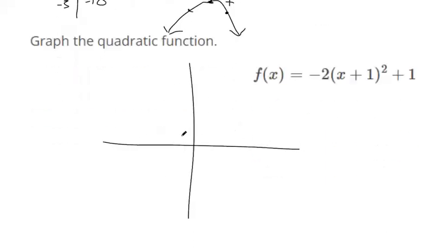A quick sketch. If you plug in negative one, that would make this be zero. So we know the vertex is going to be at negative one, comma, one.